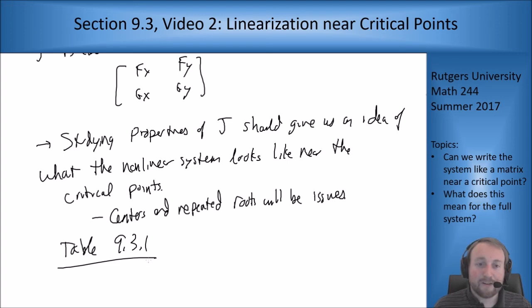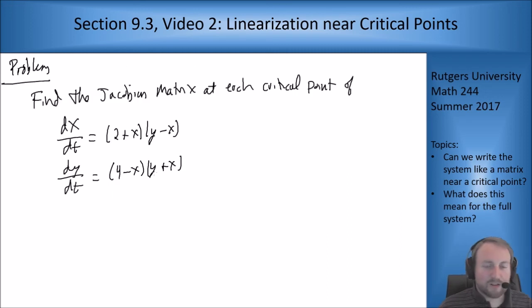I'm going to give you a problem to look at which is to find the Jacobian matrix, this J, for the system we dealt with in the last section. This is the same system you had last time, so I want you to find the Jacobian matrix at all the critical points. You should have found the critical points in section 9.2's videos, but now I want you to find the Jacobian matrix for each of the critical points.